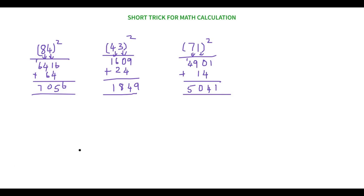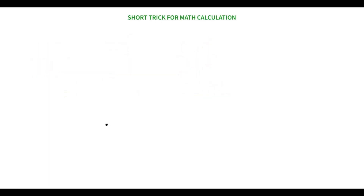I hope this method was easy to understand. If you found this video interesting, click subscribe and the bell icon for regular updates, and don't forget to like. Now we have a third trick: how to find the square of any number nearby 50 — such as 47, 52, 48, 45, 53. This trick is even easier — you can do it in essentially one step.